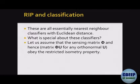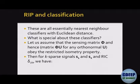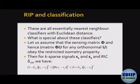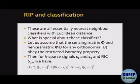Let us assume the sensing matrix phi, and hence the matrix phi U for any orthonormal U, obeys the Restricted Isometry Property. Then for k-sparse signals s_1 and s_2 with RIC delta_2k, we have that ||phi s_1 minus phi s_2||^2 is sandwiched between (1 minus delta_2k)||s_1 minus s_2||^2 and (1 plus delta_2k)||s_1 minus s_2||^2. So ||phi(s_1 minus s_2)||^2 is approximately equal to ||s_1 minus s_2||^2 provided delta_2k is small enough. Therefore you can afford to do nearest-neighbor classification directly in the compressed domain, and this is guaranteed to work almost as well as the nearest-neighbor classifier in the original domain.